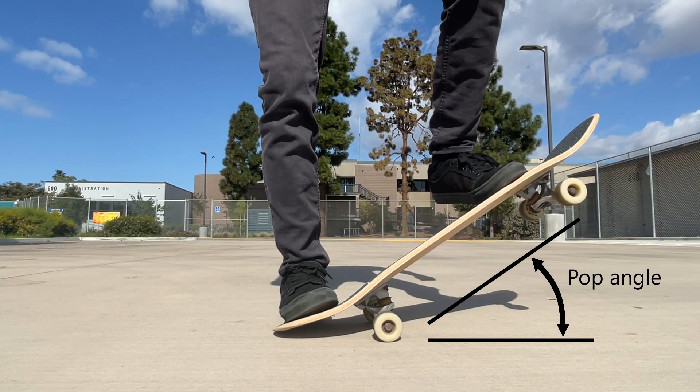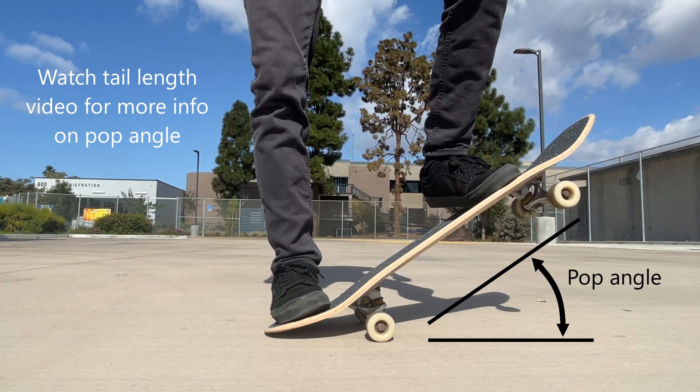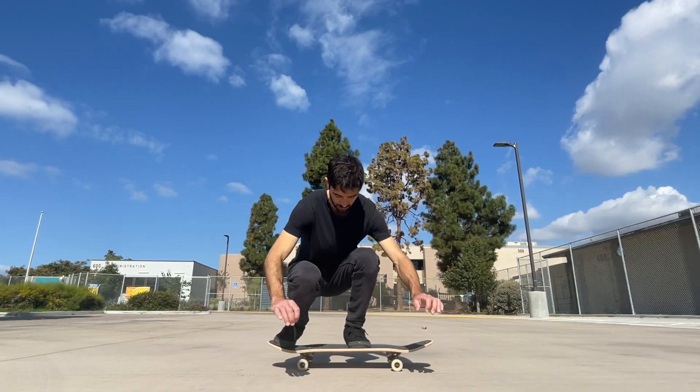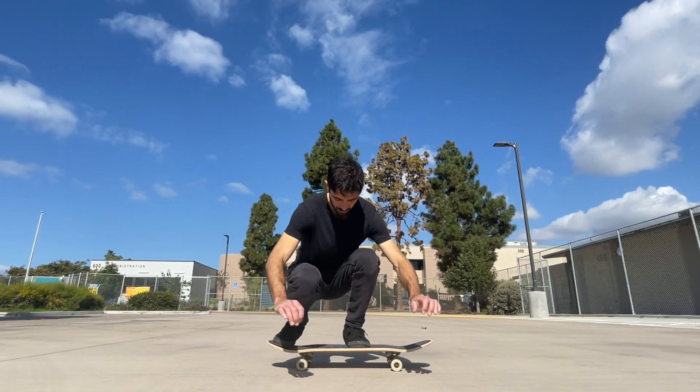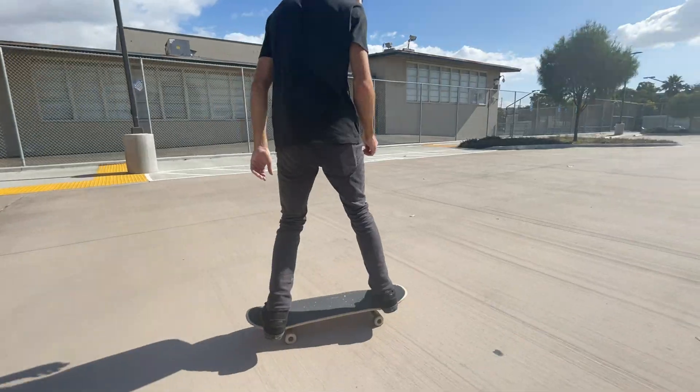Steepness increases the pop angle of the board, which is the angle the board makes with the ground when popping an ollie. Steeper pop angles usually help you pop your board off the ground a little higher.